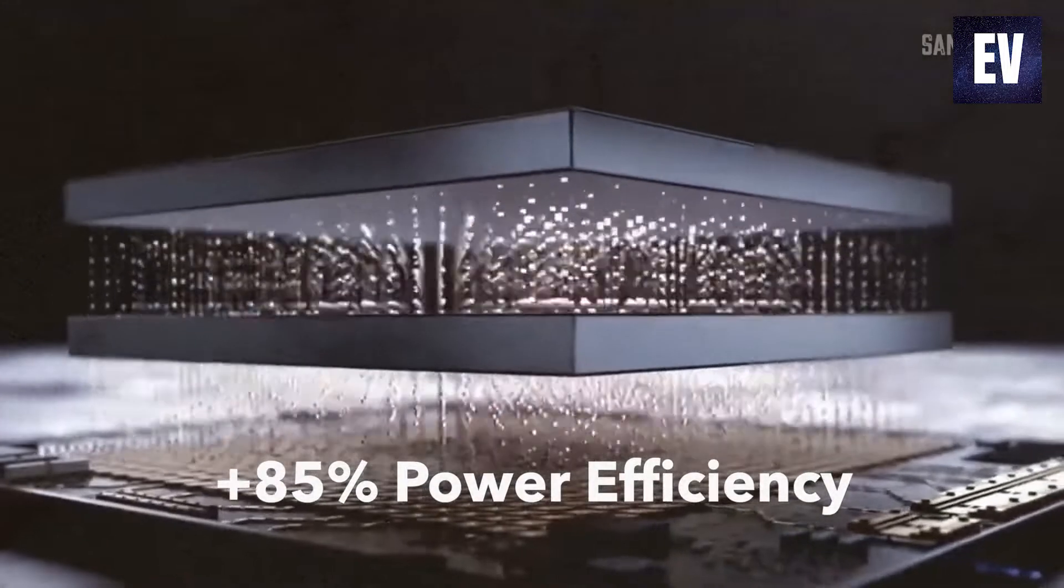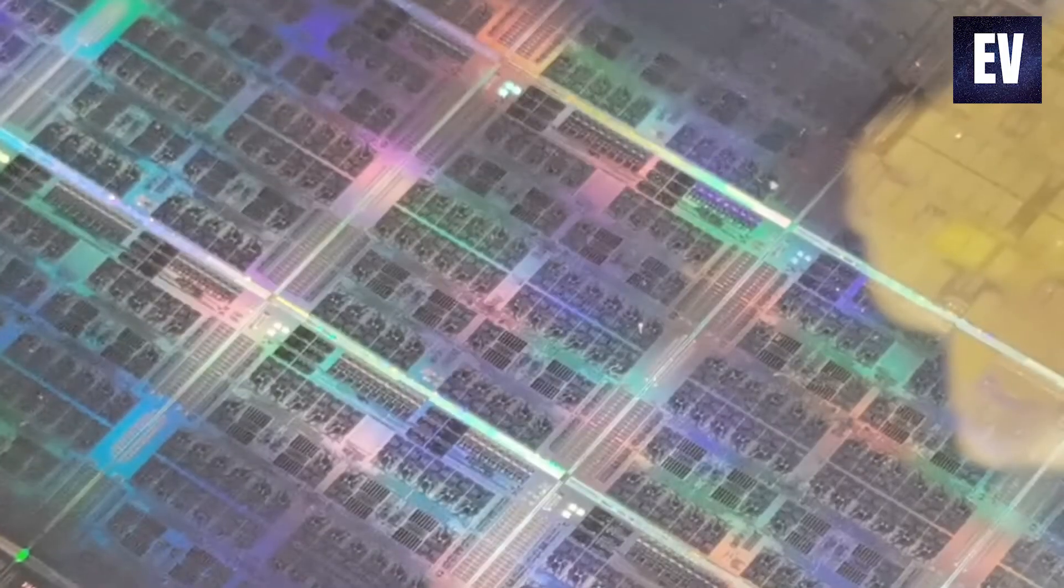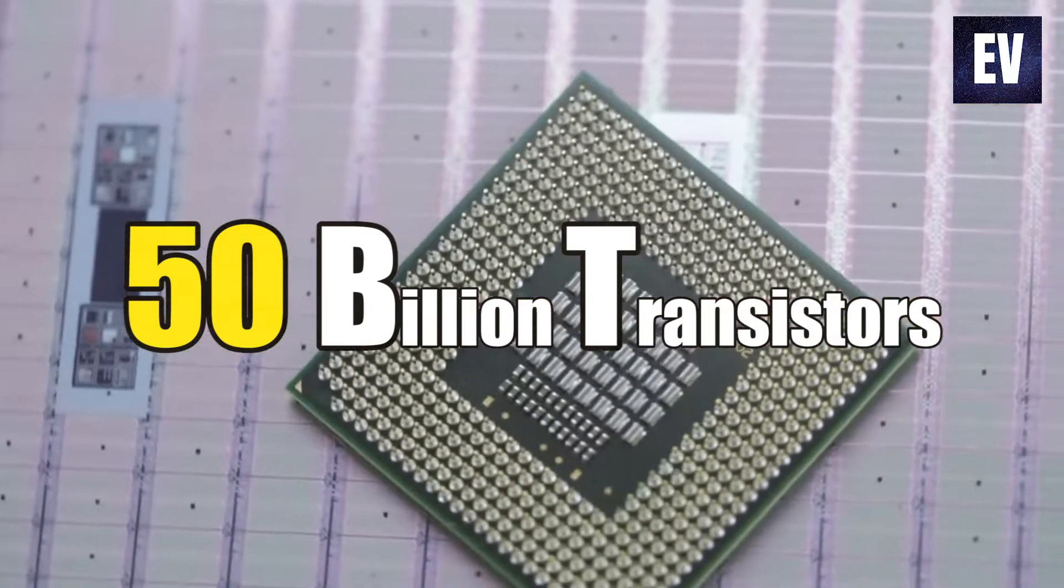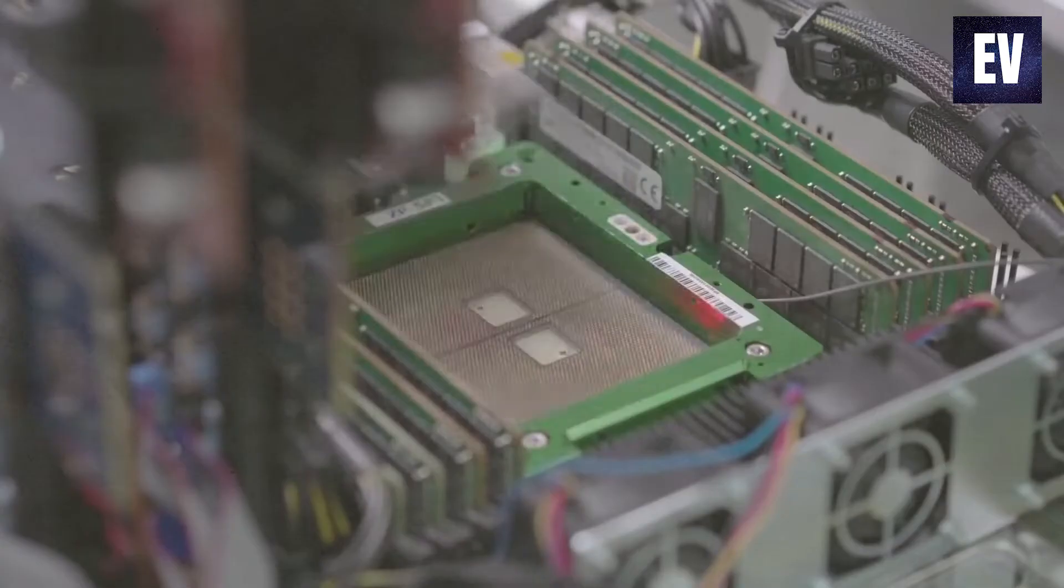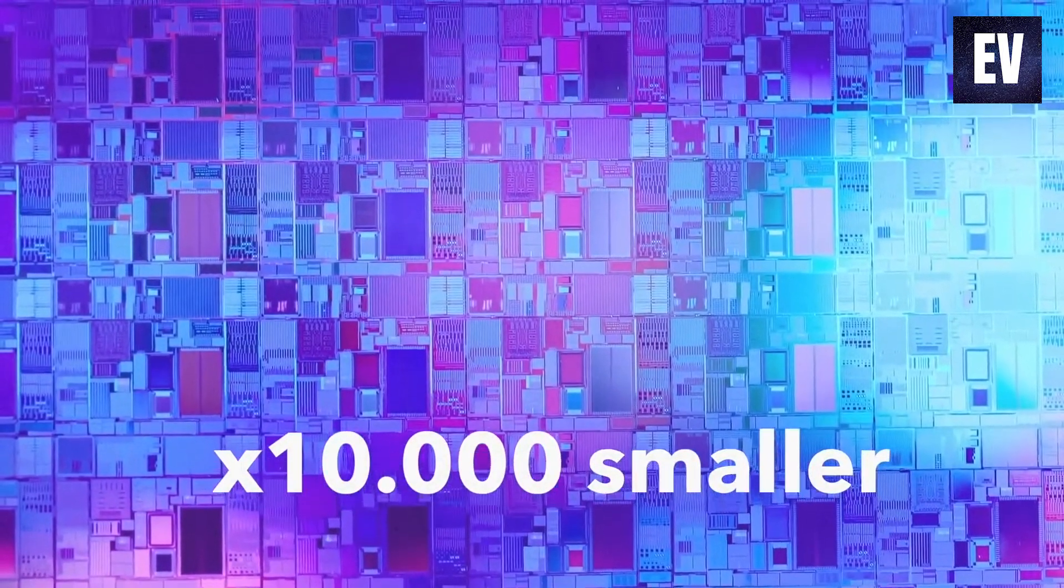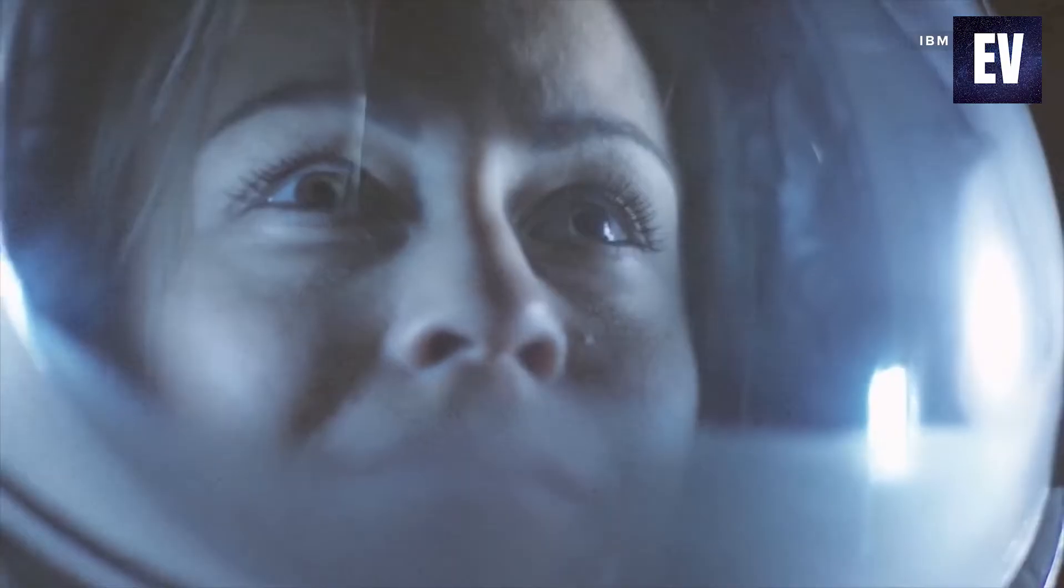Around the size of a fingernail, the new 2 nanometer chips have 50 billion transistors, each of which is approximately the size of two DNA strands, according to Mukesh Karek, Vice President, Hybrid Cloud Research at IBM. The new chip will be made accessible in the second quarter of this year.